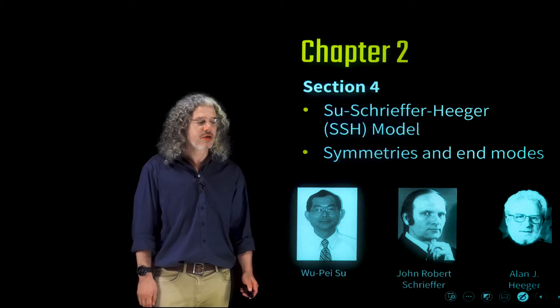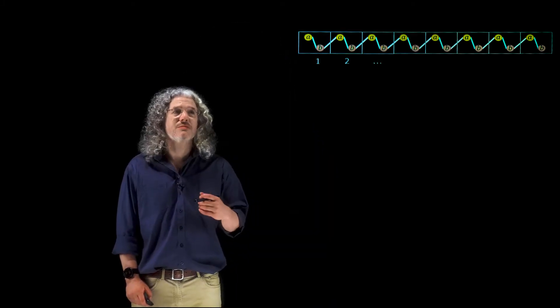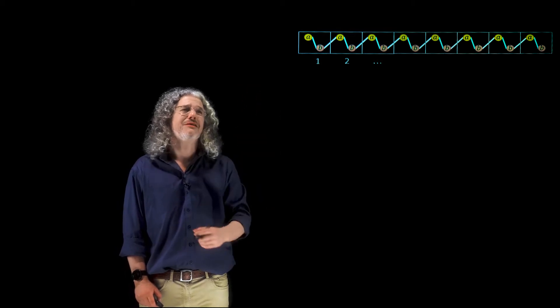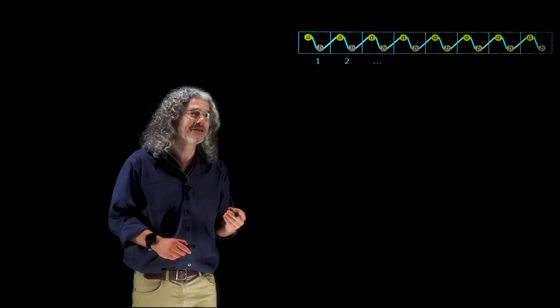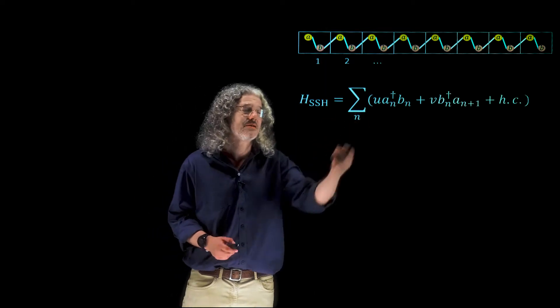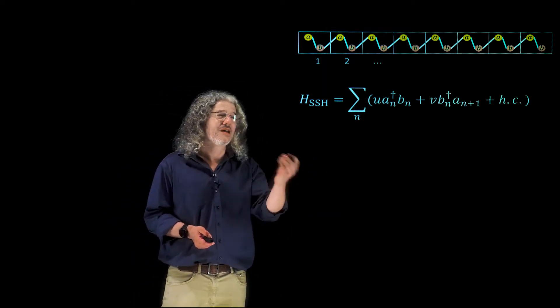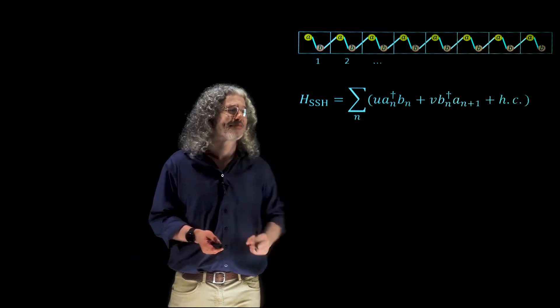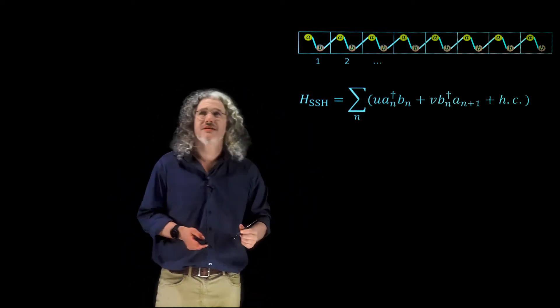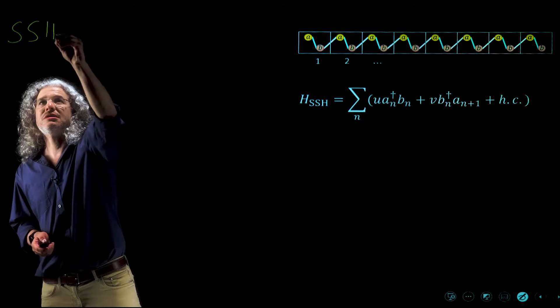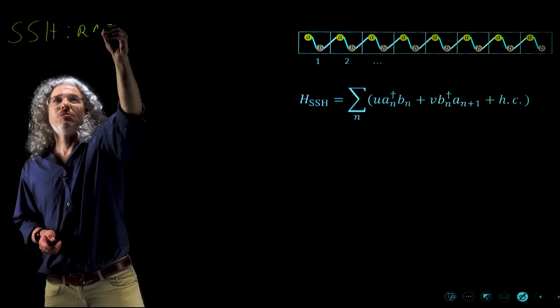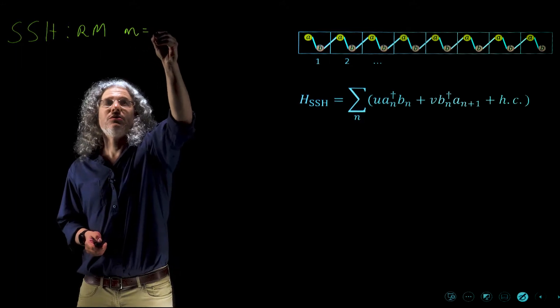Here are pictures of Su, Schrieffer, and Heeger. The SSH model was first introduced to describe a chain of carbon atoms, so it is very similar to the Rice-Mele model, but the atoms A and B are simply the carbon atoms. So the SSH model is equal to the Rice-Mele model but without the mass term, because the two atoms are identical. So A and B are actually these two atoms and they have the same mass, so that we will write that the SSH is in fact the Rice-Mele model with M equal to zero.